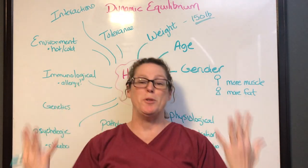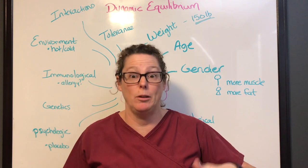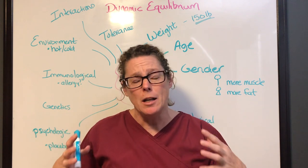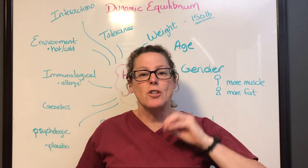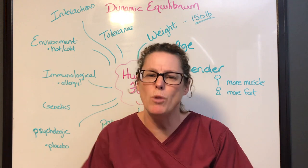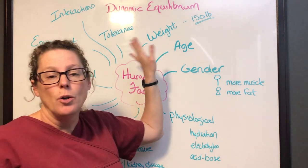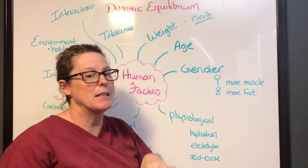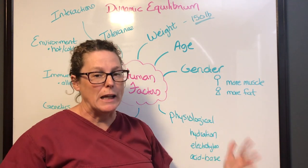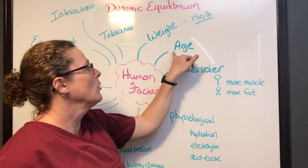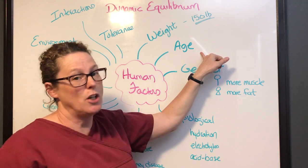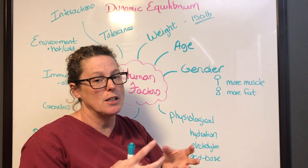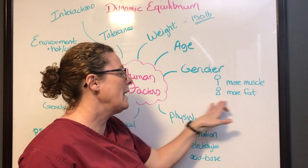There are several human factors that can also affect dynamic equilibrium. Most drug dosing is based on a healthy 150-pound person, so someone more or less than that will require an adjustment. Age impacts dosing — we have pediatric doses and geriatric doses. Gender also plays a role: men have more muscle, so injections are more rapidly absorbed, while women have more fat tissue, which can slow absorption.